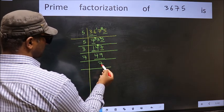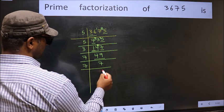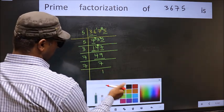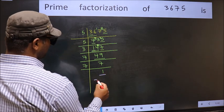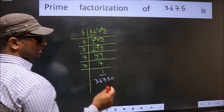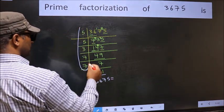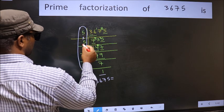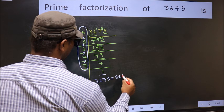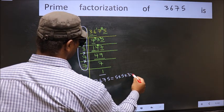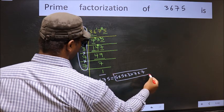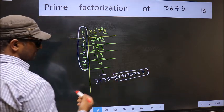Now we have 7. 7 is a prime number, so 7 times 1 is 7. So we got 1 here. So the prime factorization of 3675 is the product of these numbers: 5 into 5 into 3 into 7 into 7. This is the prime factorization of 3675.